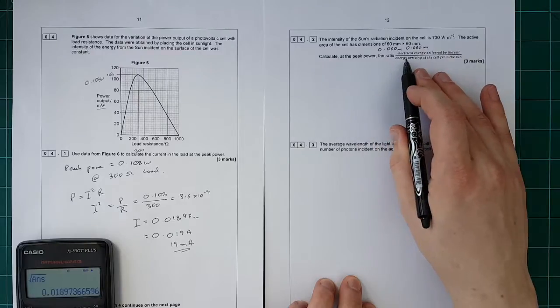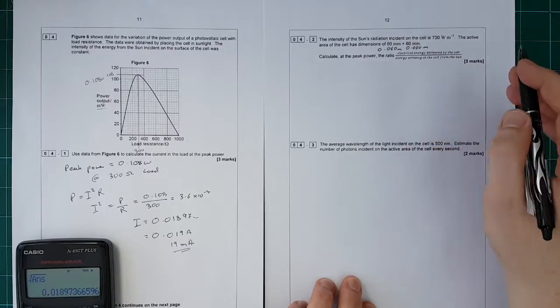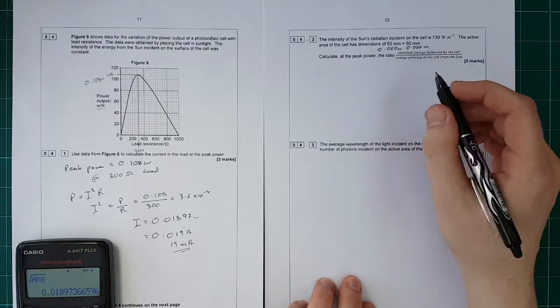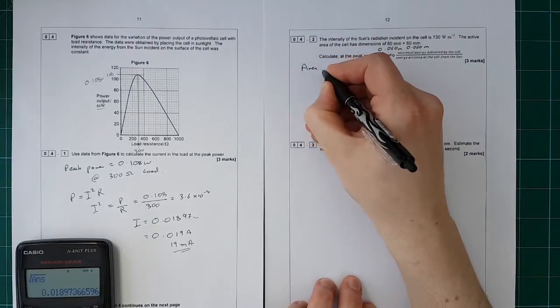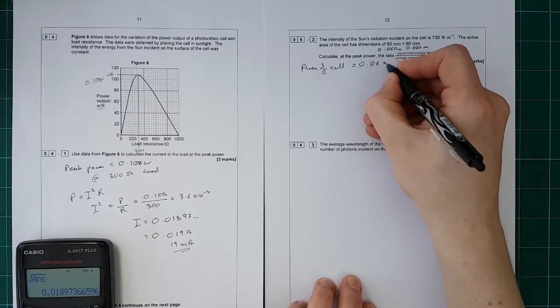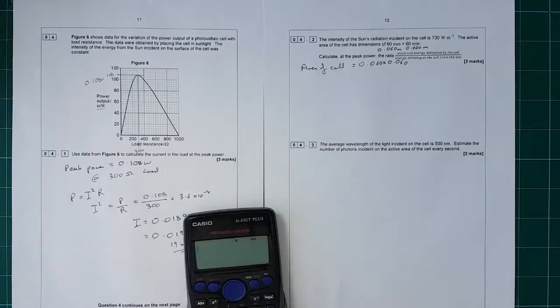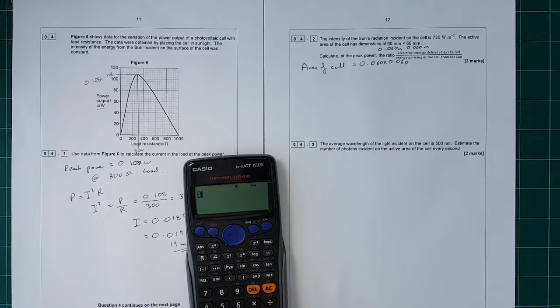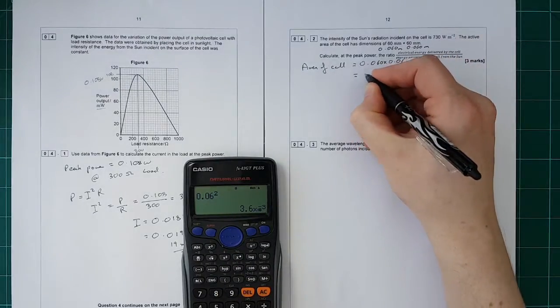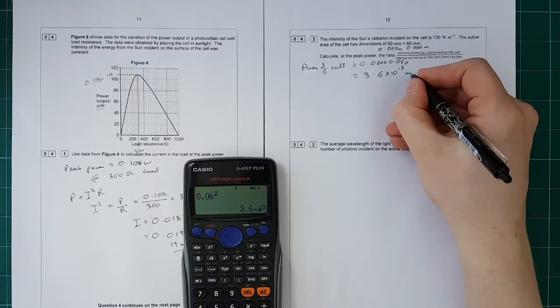Calculate the peak power, the ratio of electrical energy delivered by the cell to the electrical energy arriving at the cell from the sun. First we need the area of the cell. 0.060 times 0.06, so that is 0.06², which equals 3.6 × 10⁻³ metres squared.